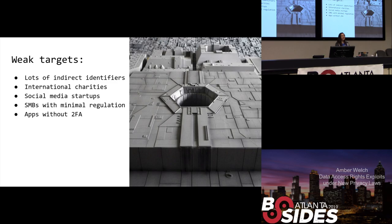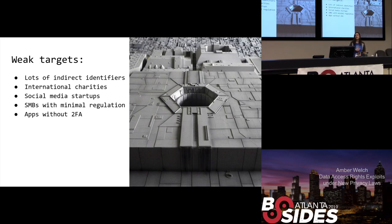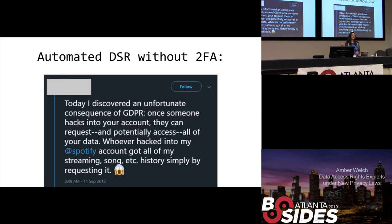Weak targets tend to be organizations that have a lot of indirect identifiers and metadata but not accounts associated with that metadata. International charities are obligated to abide by a lot of privacy laws but probably don't have much budget to do that. Social media startups tend to be a little loose about privacy anyway and usually haven't hired a compliance person yet. Also, anything in the minimally regulated space like hospitality, and any apps without 2FA. As an example I found on Twitter: somebody found that her Spotify information had been downloaded because Spotify has an automated DSR form, and somebody was able to access her account because there is no 2FA.